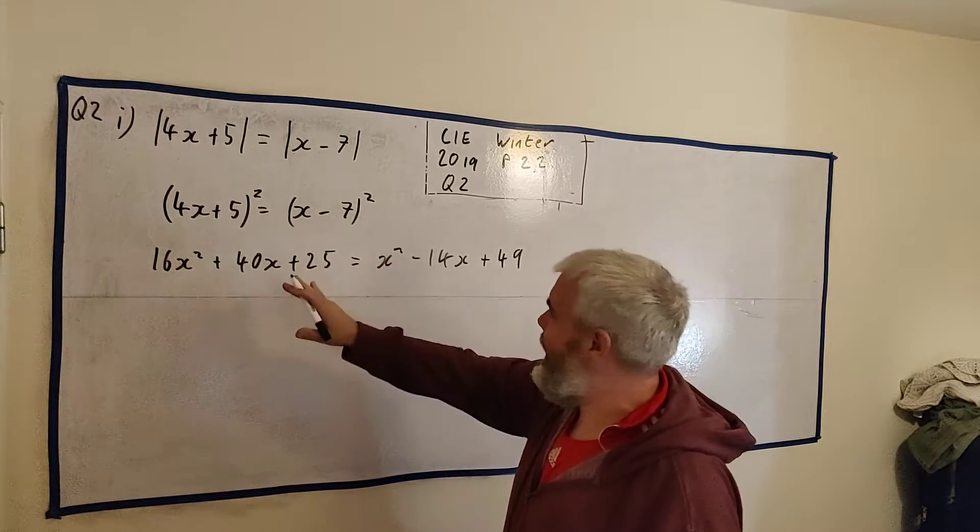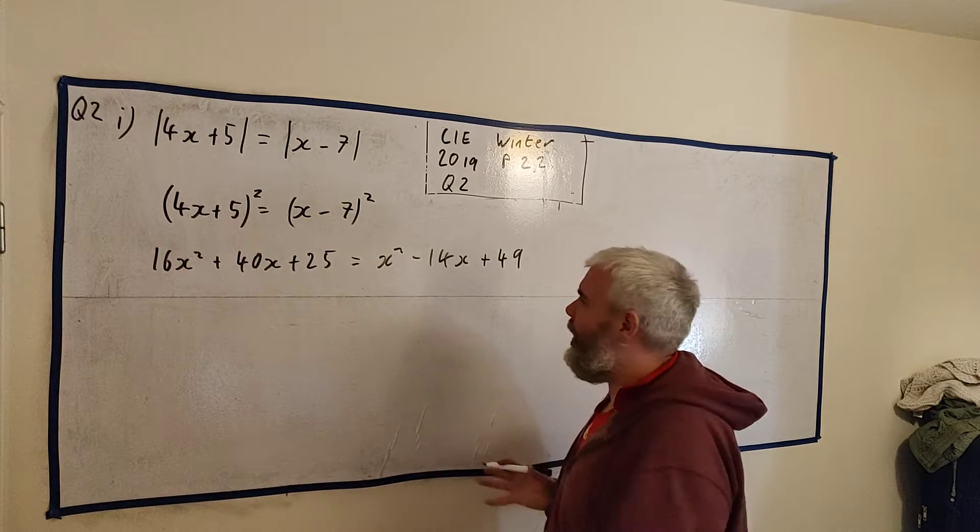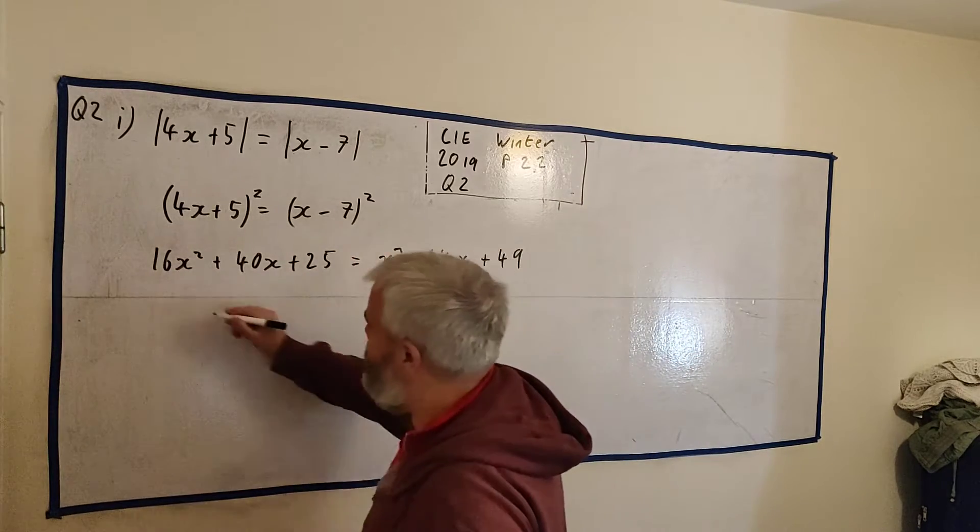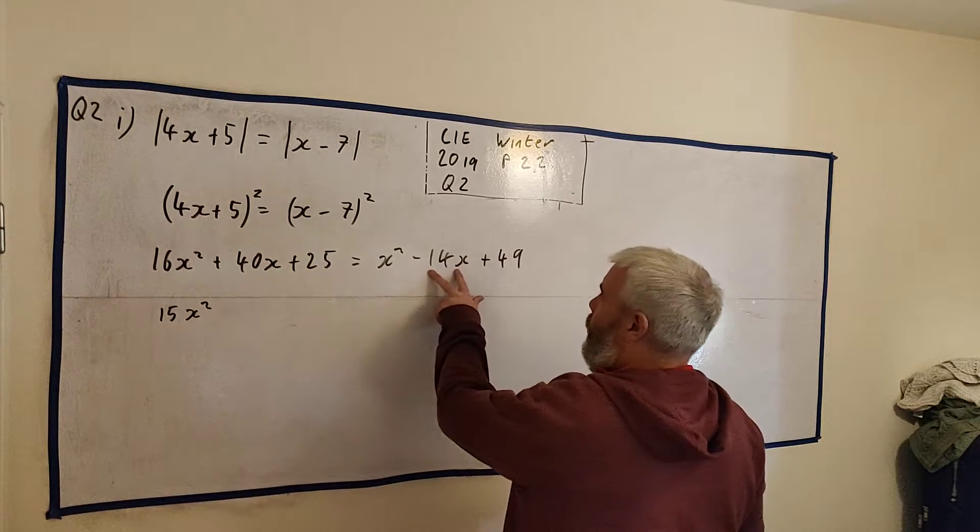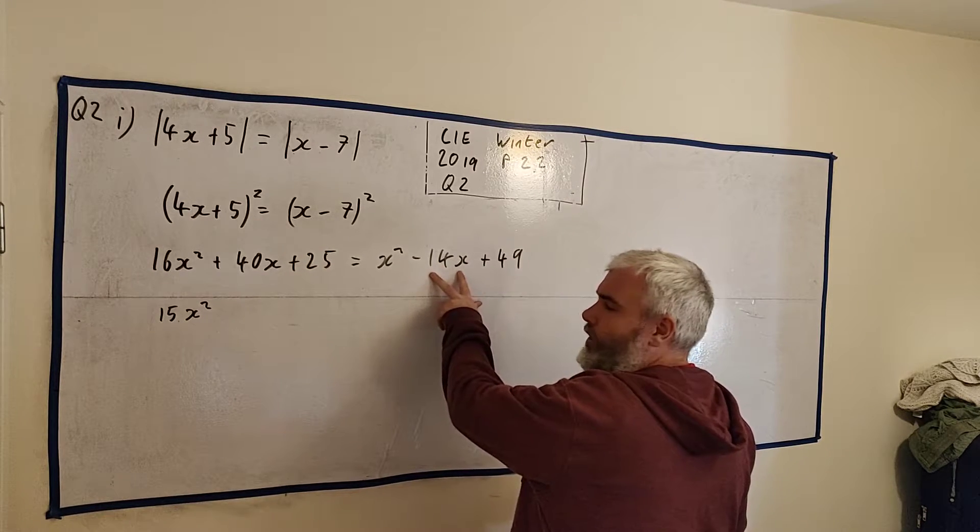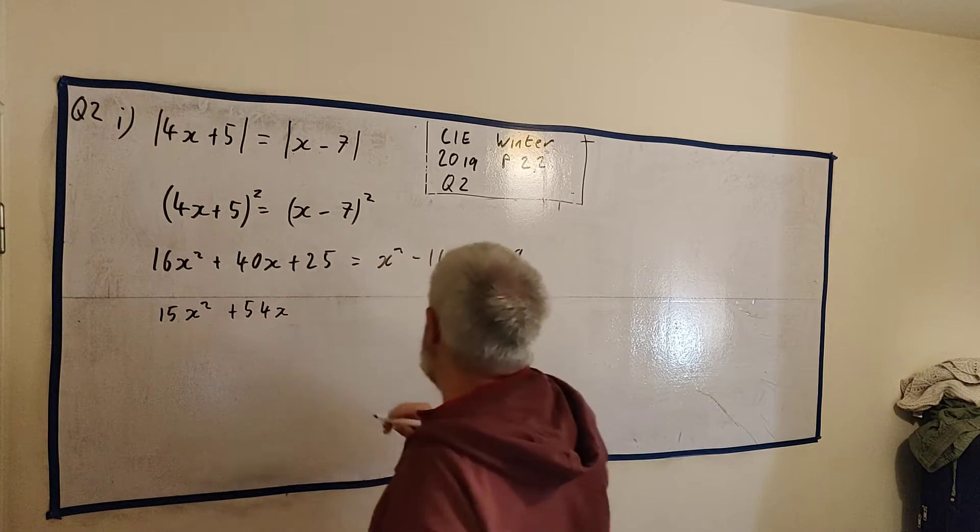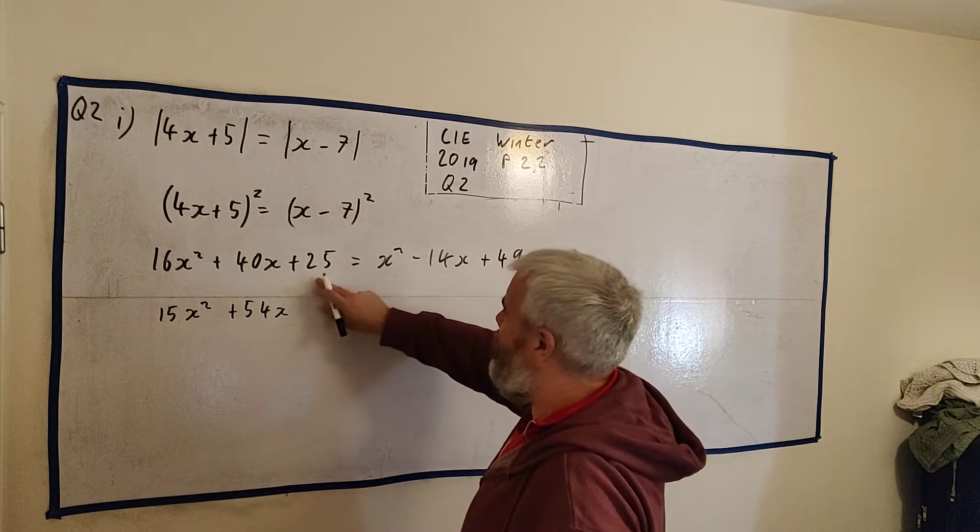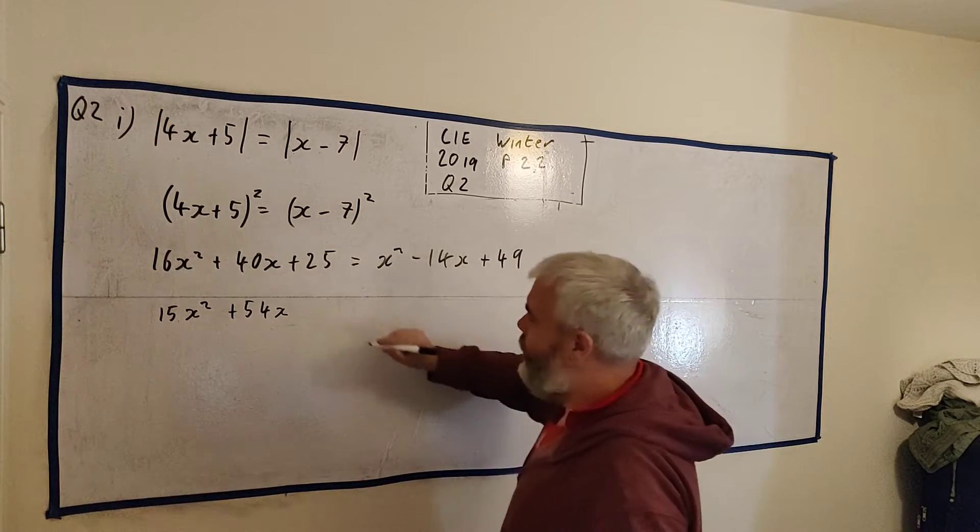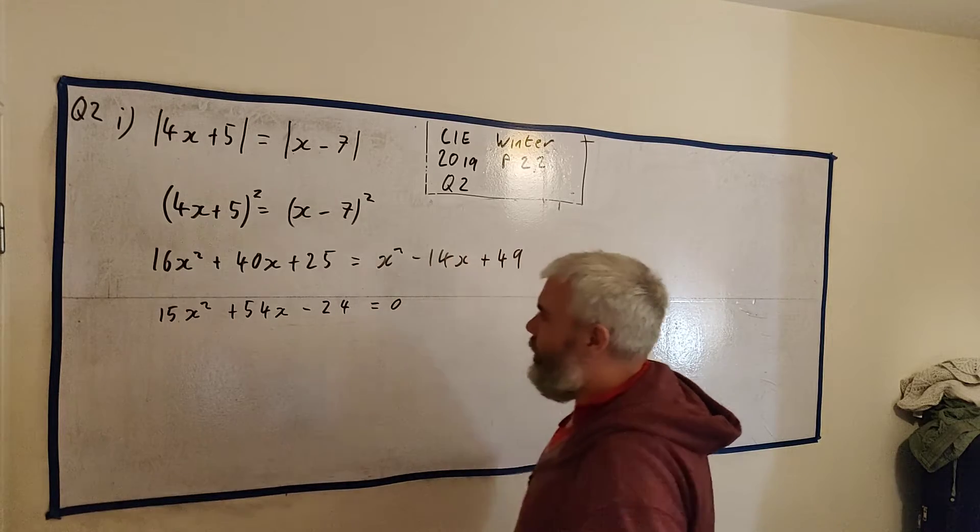We'll take everything on the left side. We'll keep the x squares positive. So let's take this from both sides. We'll get 15x squared. We'll add 14x to both sides. We'll get 54x. And we'll take this number from both sides. And 25 minus 49, I believe, is minus 24. That equals 0.